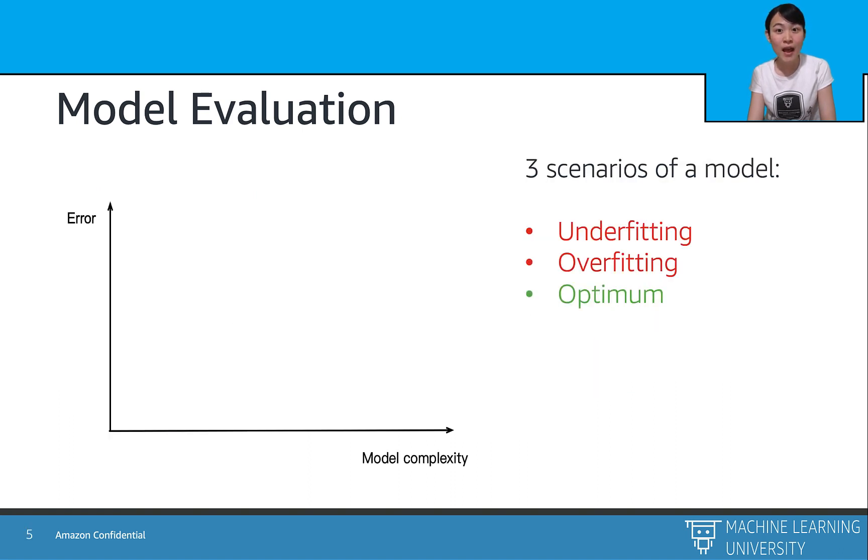To sum up, let's draw three scenarios over the plot here, where the x-axis explains the model complexity and the y-axis explains the model loss. So we can draw the training loss and generalization loss in this plot. As we are increasing the model complexity, the training loss always decreases. However, the generalization loss may decrease at first and then bumps back if the model is too complicated.